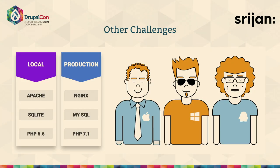Another challenge is version mismatches. On a local machine, a developer might be using Apache, SQLite, or even PHP 5.6, which is very common. But in production, we're now using Nginx, MySQL, and PHP 7.3 or another 7.x version. Additionally, developers might be on Mac, Windows, or Linux, but most of our servers are Linux machines. The environment working on Windows is totally different from one running on Linux.